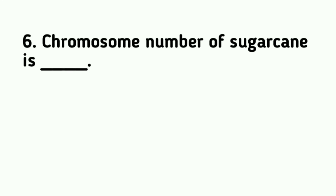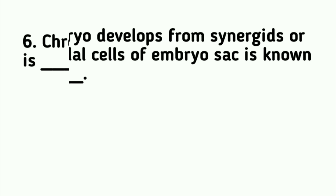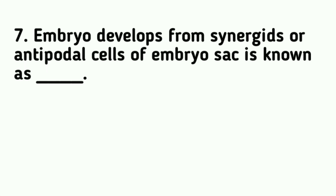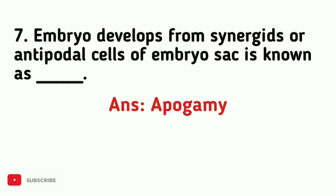The chromosome number of sugarcane is 80. Embryo developed from the synergids or antipodal cells of the embryo sac is known as APOGAMY.